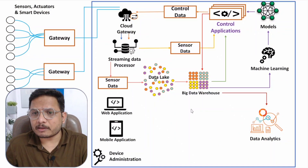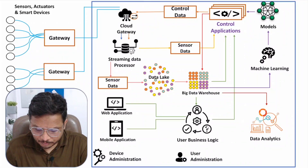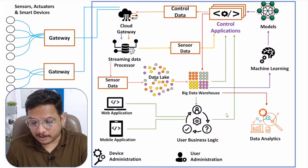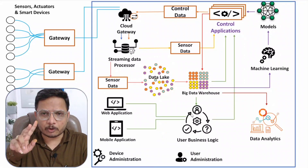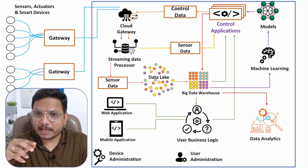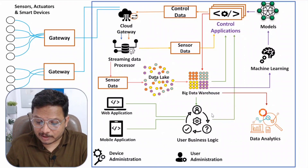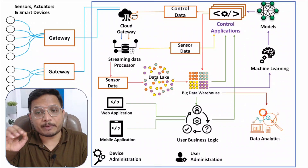The user administration block is interfaced with device administration and can send signals to the control application. User admin supports both manual and automatic control. In manual mode, user signals are passed directly to actuators; in automatic mode, the full IoT system handles control.